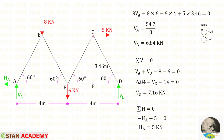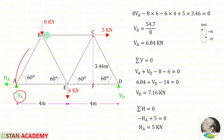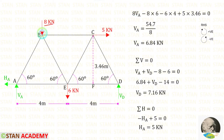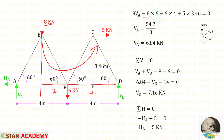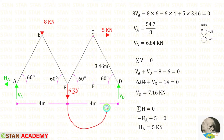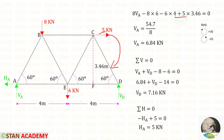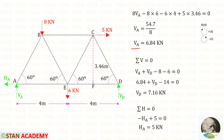Now let us find the reactions. First, I am going to find the vertical reaction VA by taking moments about D. Moving towards the right-hand side, clockwise will be positive and anti-clockwise will be negative. VA acts clockwise, so it is positive with a distance of 8 meters: 8VA. The 8 kN load acts anti-clockwise, so it is negative with a distance of 6 meters. The 6 kN load is also anti-clockwise and negative with a distance of 4 meters. The horizontal load of 5 kN acts clockwise, so it is positive with a perpendicular distance of 3.46 meters. After calculation, VA = 6.84 kN.